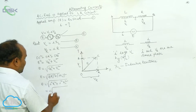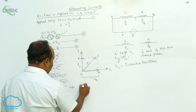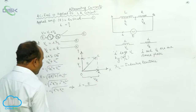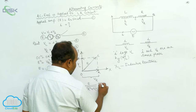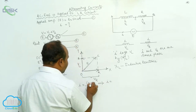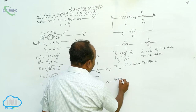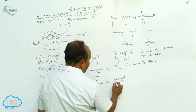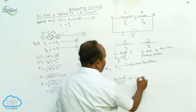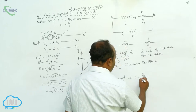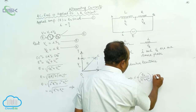Therefore, I equals E divided by the square root of R square plus XL square. Now, the EMF E equals E₀ sin(ωt), so substituting: i equals E₀ sin(ωt) divided by the square root of R square plus XL square, which gives i equals [E₀ / √(R² + XL²)] × sin(ωt).